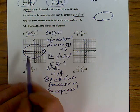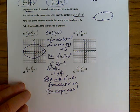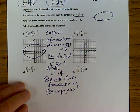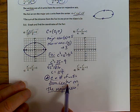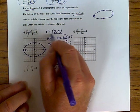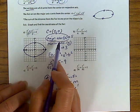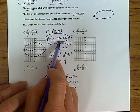Most of the time you're not going to graph them like this. What you're going to do is use the number of units from the center on the major axis. For this question the major axis was x, so since x was the major axis...